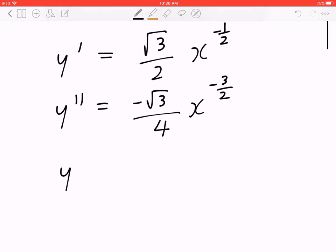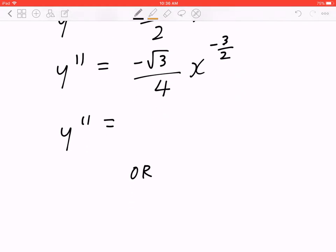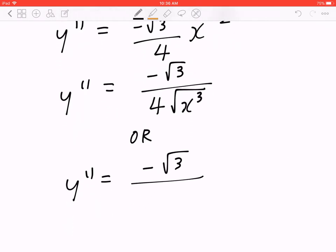Here comes the final answer, and we'll show it to you in two different ways. Y double prime equals negative root 3 divided by 4 times x to the power of 3 over 2. But if you put this back in radical form, it will be the square root of x cube, or you can leave it as negative root 3 divided by 4 times the square root of x to the power of 3.